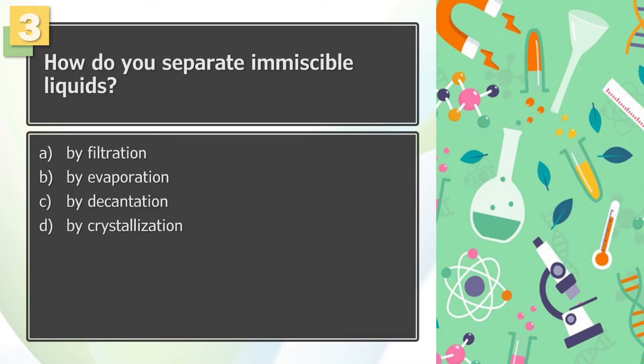Question Number 3: How do you separate immiscible liquids? A. By filtration, B. By evaporation, C. By decantation, D. By crystallization.